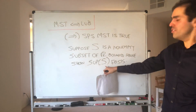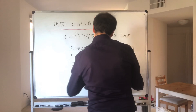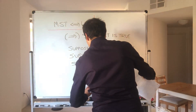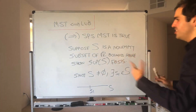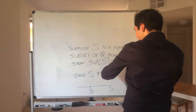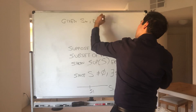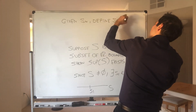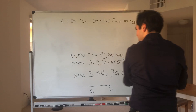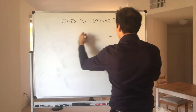For the first term, just choose any element in S, since we know it's not empty. So since S is not empty, there exists S₁ in S — we call this S₁. Now given Sn, define Sn₊₁ as follows. It's a bit of a non-obvious construction, so bear with me.